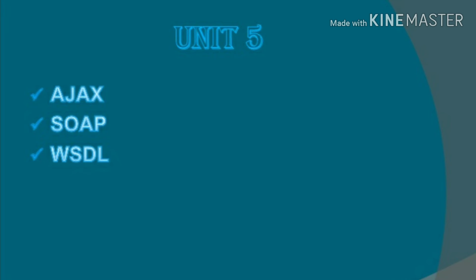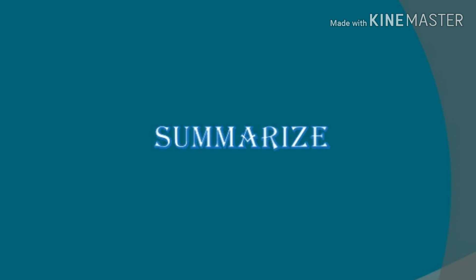Next is the fifth unit. The fifth unit is a very simple unit. You can learn about Ajax — concentrate on Ajax. Let's summarize: first unit is very important, second unit is CSS, third unit is JDBC connectivity, fourth unit is cookies and PHP operations, and for the fifth unit you can concentrate on the third unit Part C.